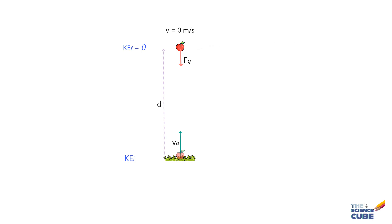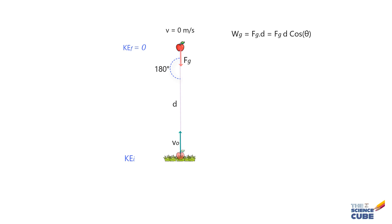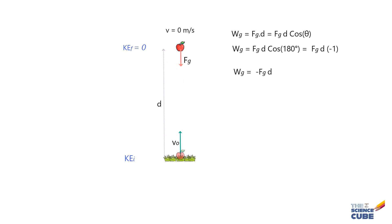It is quite simple. All you need to do is use the formula: work done equals the dot product of force of gravity and displacement d, where theta is the angle between the force of gravity and displacement. Here we can see that the force vector is acting in the downward direction while the displacement is in the opposite direction — 180 degrees apart. So when you put theta as 180 degrees, what you get is work done equals force of gravity times displacement d times minus 1, because cos(180°) equals minus 1.